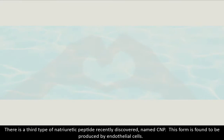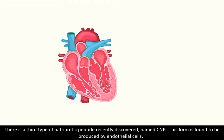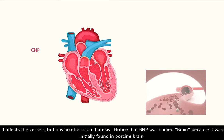In short, natriuretic peptides work by relaxing the heart and preventing more blood from arriving to it, and reducing the pressure against which the heart needs to pump. There is a third type of natriuretic peptide recently discovered, named CNP. This form is found to be produced by endothelial cells and it affects the vessels.